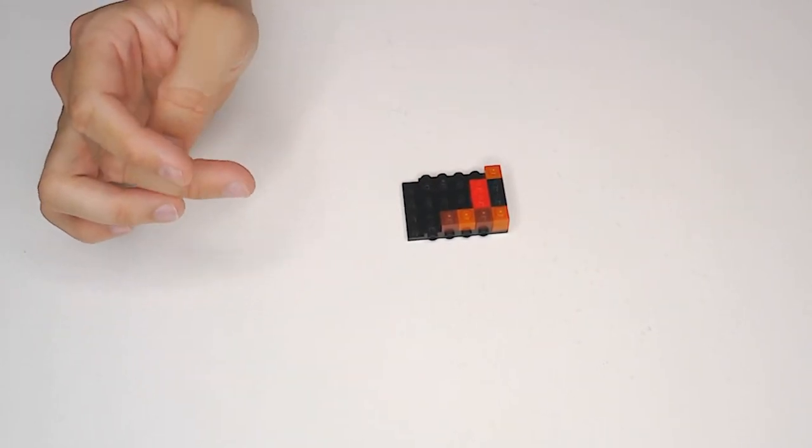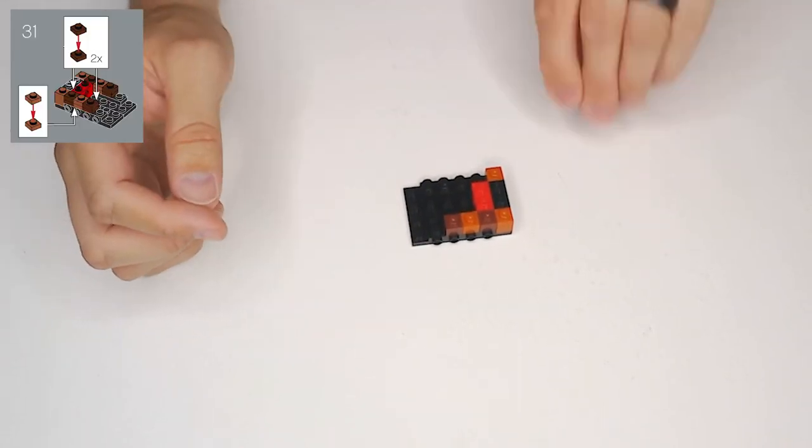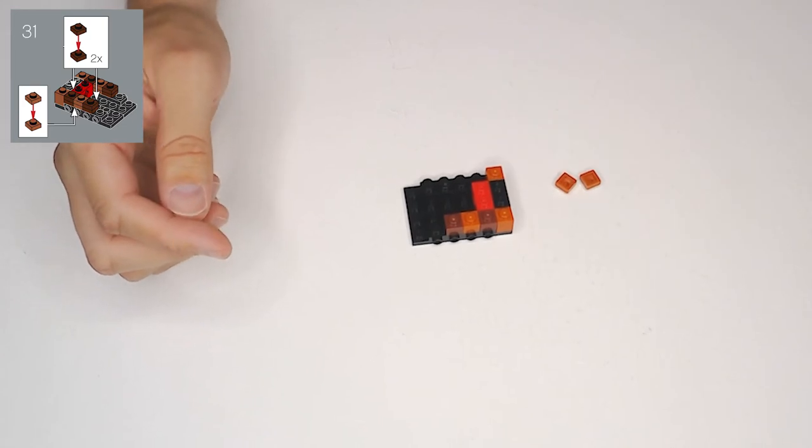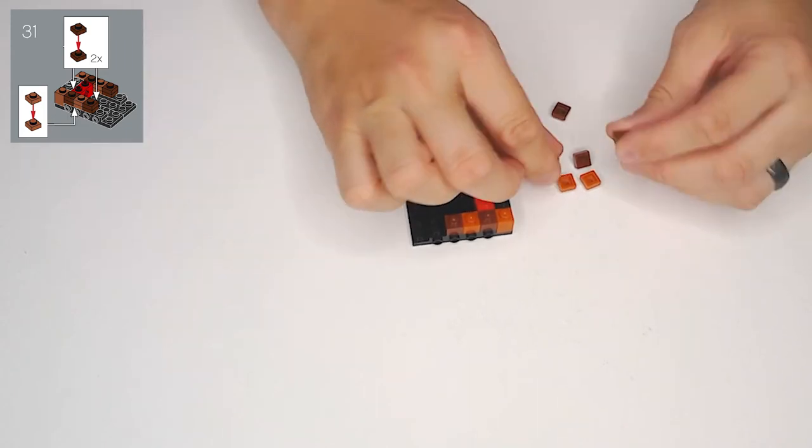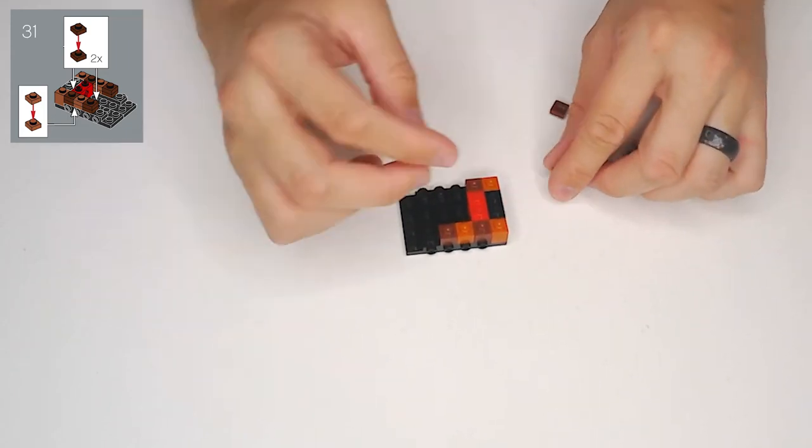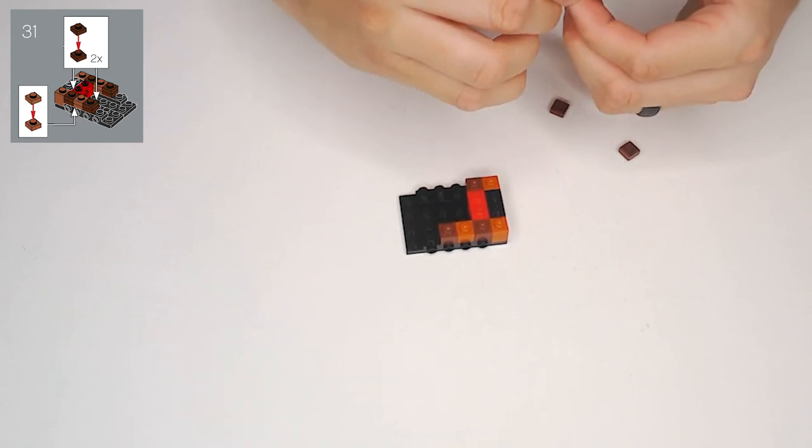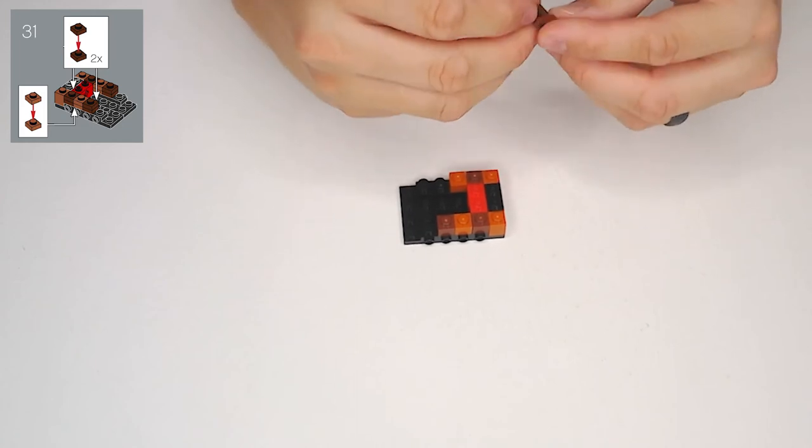Then in 31, we're going to make more of these little checkerboard guys. Okay, so we want 2 of the light brown and 4 of the dark brown again. Basically we're going to save the right side. And we're going to need the first one of the dark brown, and the light brown, and the dark brown.